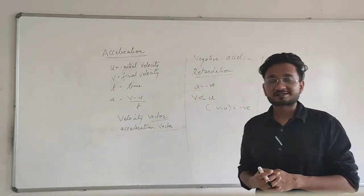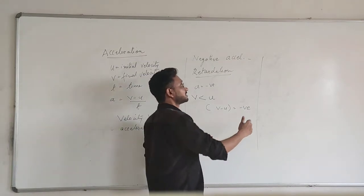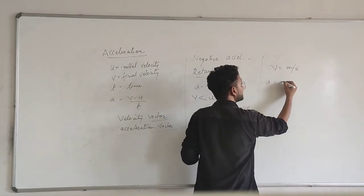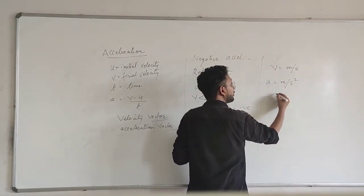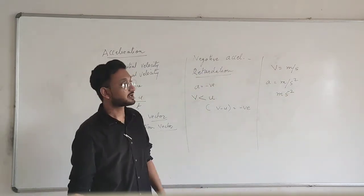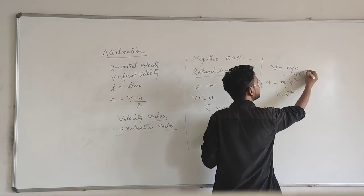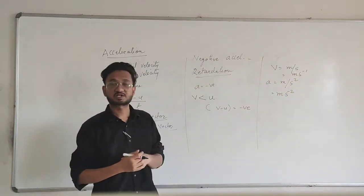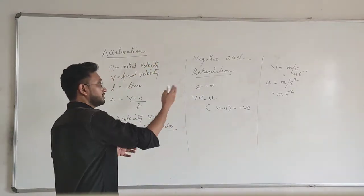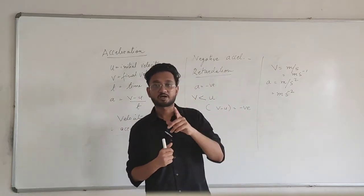The unit of acceleration is meters per second square. Don't get confused between velocity and acceleration — velocity has meters per second and acceleration has meters per second square. It is also written as meter per second raised to minus 2, just like meter per second is the same as meter per second raised to minus 1. The unit of acceleration is meters per second square — remember that.